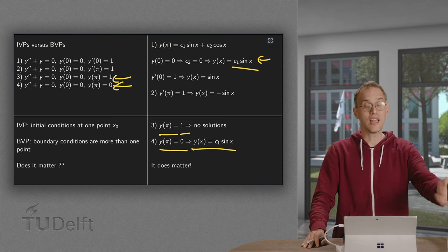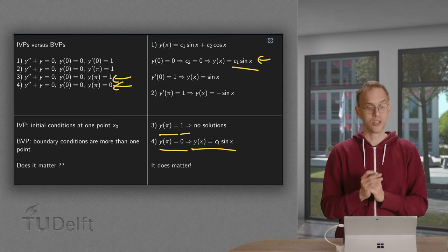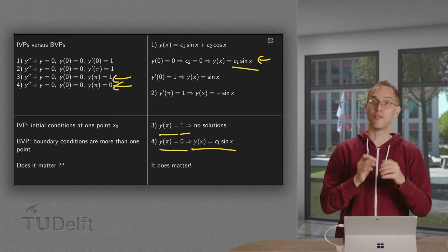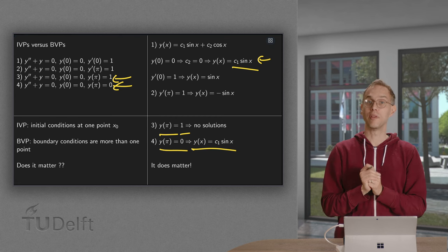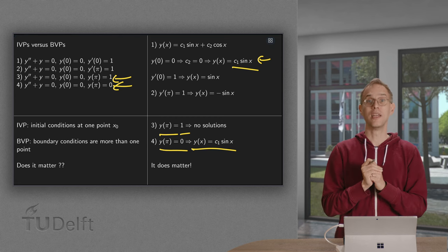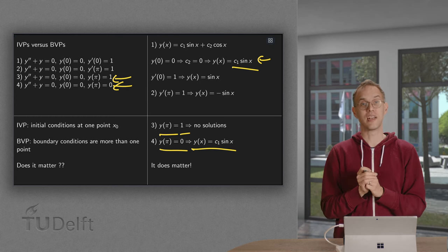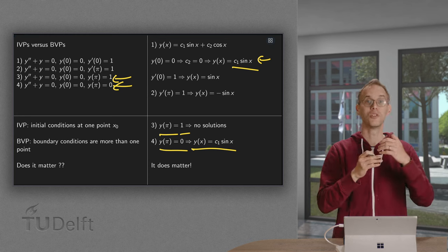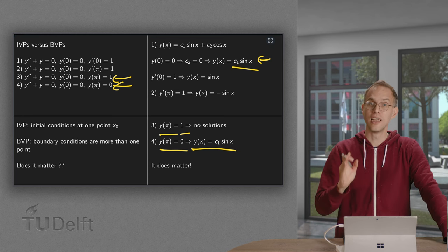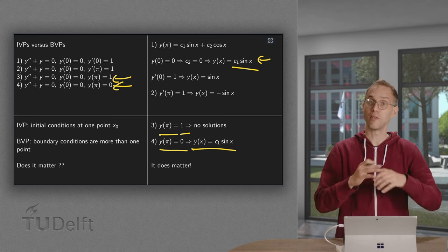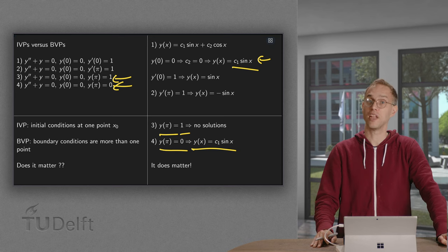So does it matter that we have a boundary value problem instead of an initial value problem? Yes, it definitely matters. Because in a boundary value problem we can find no solutions, one solution or infinitely many solutions. It definitely matters that we have a boundary value problem instead of an initial value problem.